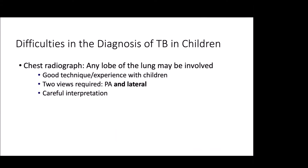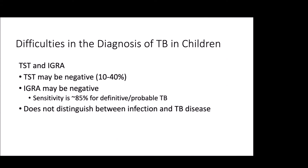The chest radiograph has its challenges. You're looking at any lobe of the lung, not just the upper lung fields. You need good technique and experience with children — people who know how to read pediatric films and how to read them for pediatric TB. Two films are always required: a PA and the lateral. I can't stress how important that lateral film is.